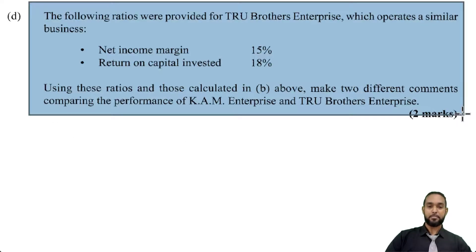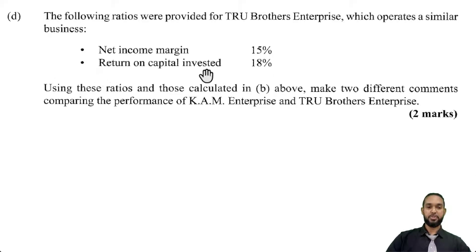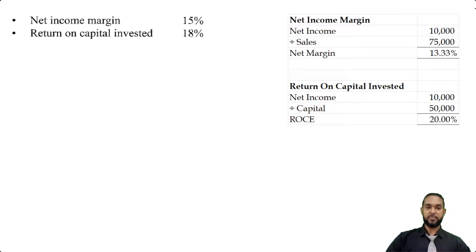Now we're getting into comparison, which is where we really use ratios. The question says the following ratios were provided for True Brothers Enterprise, which operates a similar business: net income margin 15%, return on capital invested 18%. Using these ratios and those calculated in part B above, make two different comments comparing the performance of KAM Enterprise and True Brothers Enterprise.